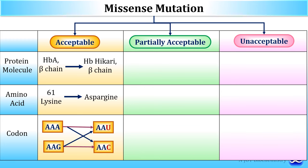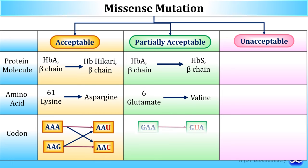In the acceptable missense mutation of the adult hemoglobin beta chain, it changes to HB Hikari. At position 61, lysine is changed to asparagine. Lysine is coded by AAA and AAG, so the third nucleotide A or G can change to uracil or cytosine. If guanine is changed to uracil or cytosine, the lysine at position 61 becomes asparagine and HBA becomes HB Hikari.